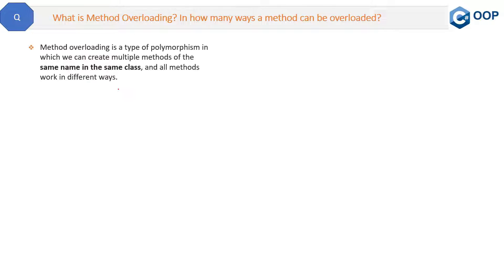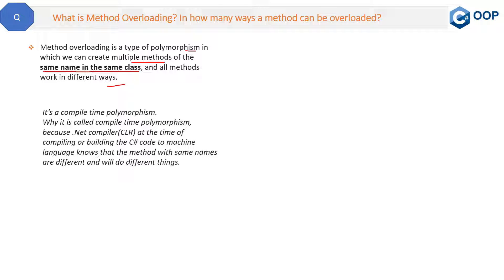Let's start from the definition. Method overloading is a type of polymorphism in which we can create multiple methods of the same name in the same class, and all methods work in different ways. This is method overloading. It is also called compile-time polymorphism.